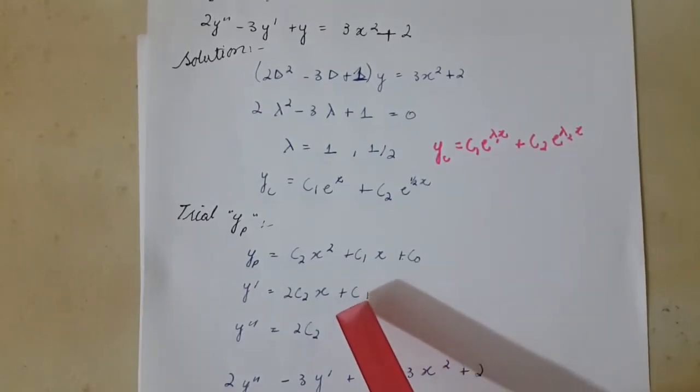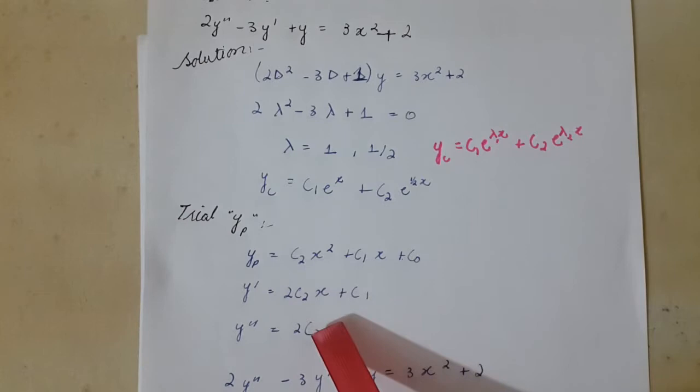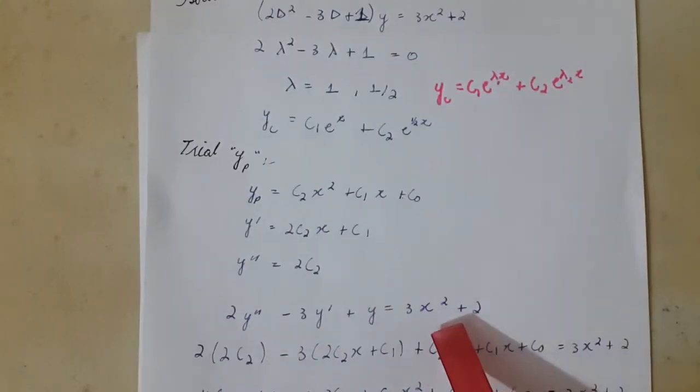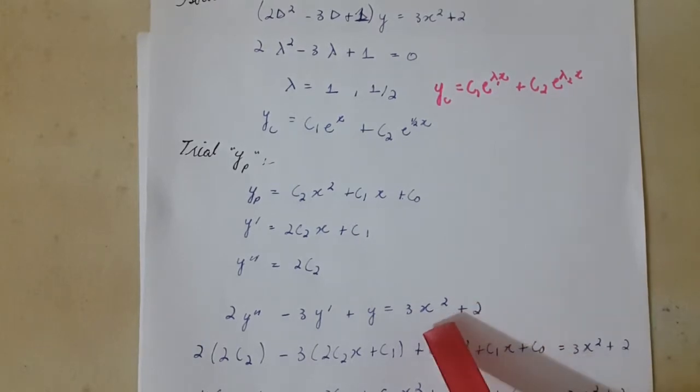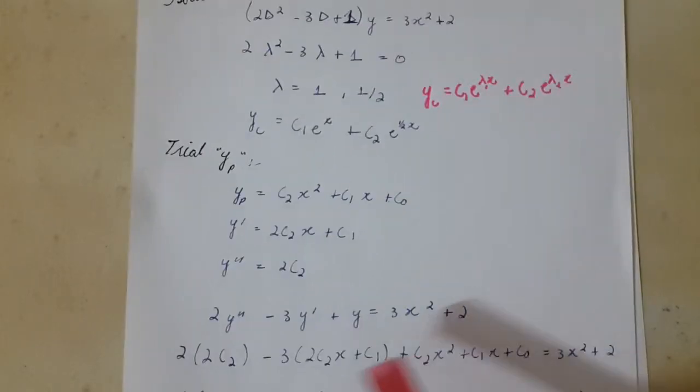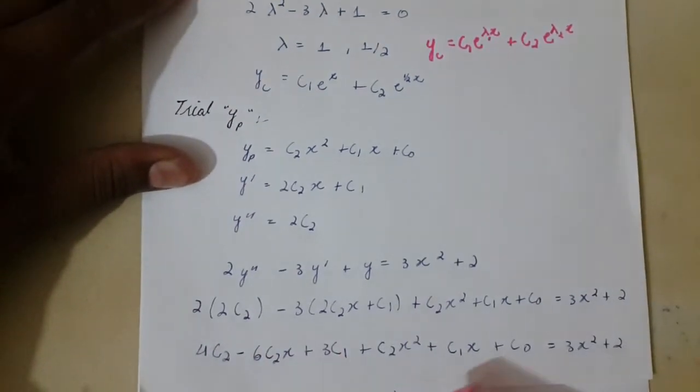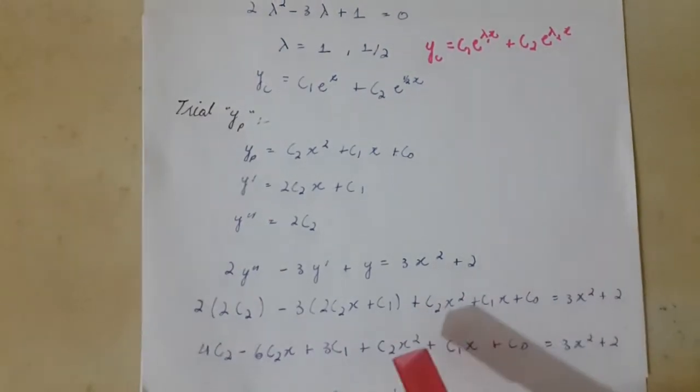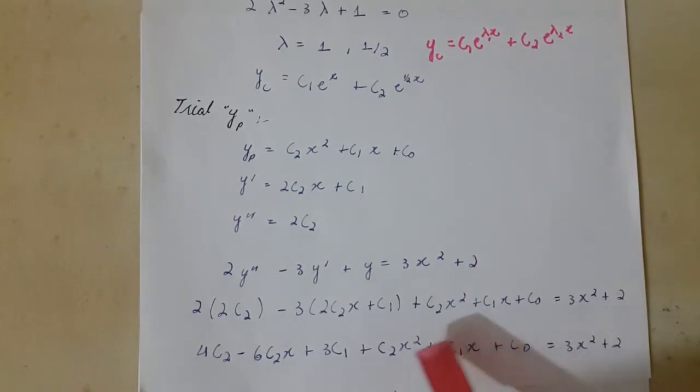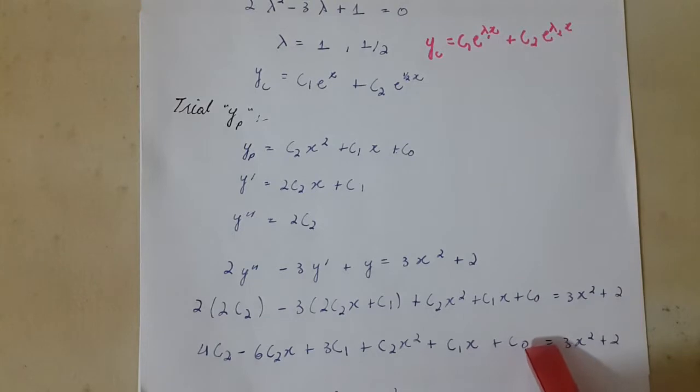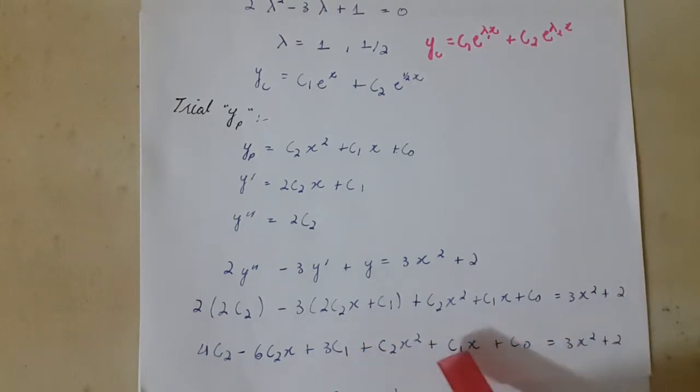Now we will put the values of y, y' and y'' in this equation which is given in our question. For that I got this equation. Now I will compare power of x from left to right to find the values of these constants, that is c1, c2 and c0.